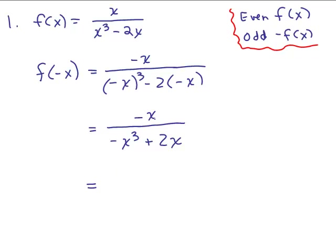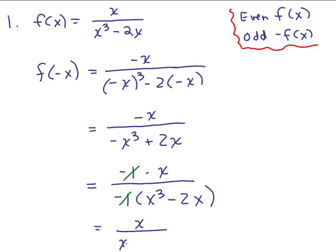So how about if I factor out a negative 1 out of the numerator and a negative 1 out of the denominator? This is a tricky problem. So negative x is the same thing as negative 1 times x. And if I factor out a negative 1 out of the denominator, I have x cubed minus 2x. So notice those negative 1s cancel and I end up with x over x cubed minus 2x. That's the original function. That's exactly f of x.